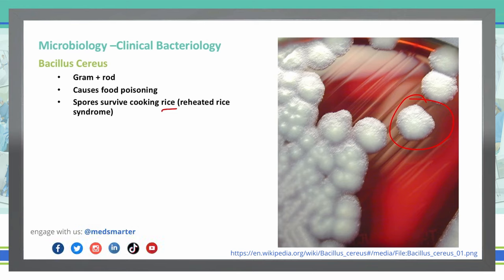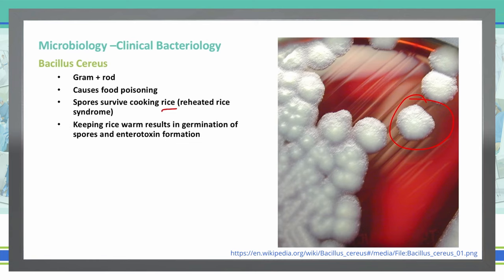If the rice is improperly refrigerated, the endospores can then germinate. And then with reheating, not getting it back up to a proper temperature, can allow those germinated spores to survive and to cause infection. The important thing here is to make sure that we keep rice warm above 50 degrees Celsius, or at refrigerated temperatures below 10 degrees Celsius.